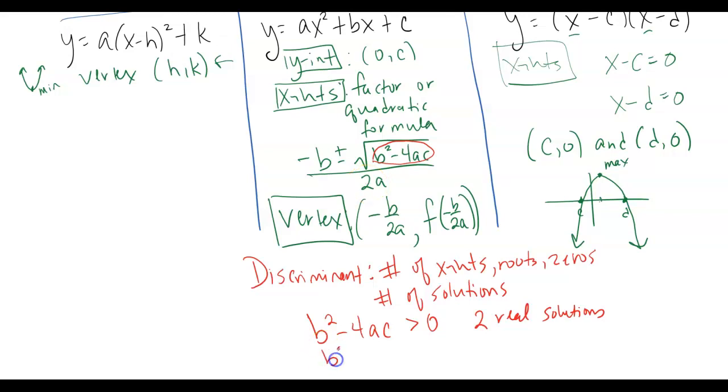If, however, you get a negative, right? If b squared minus 4ac is negative, then what happens is you have a negative under a square root. And you did this last year in Algebra 2. If there's a negative under the square root, you are imaginary. So you're going to have two imaginary or non-real solutions. Or some people say no solutions.